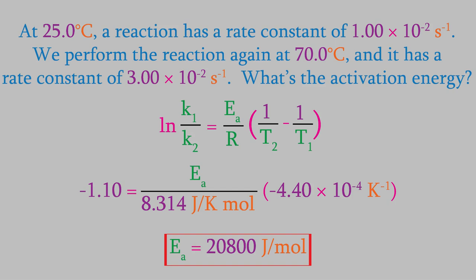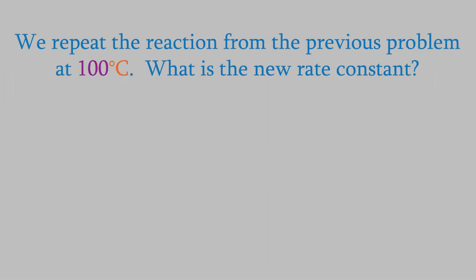You probably had to solve a problem like that if you took the General Chemistry 2 lab course. One thing to remember is that once we calculate the activation energy for a reaction, it's always the same for that reaction, and we can use it in future calculations. For example, suppose we perform the same reaction again, but this time at a temperature of 100 degrees Celsius. What will be the new rate constant?